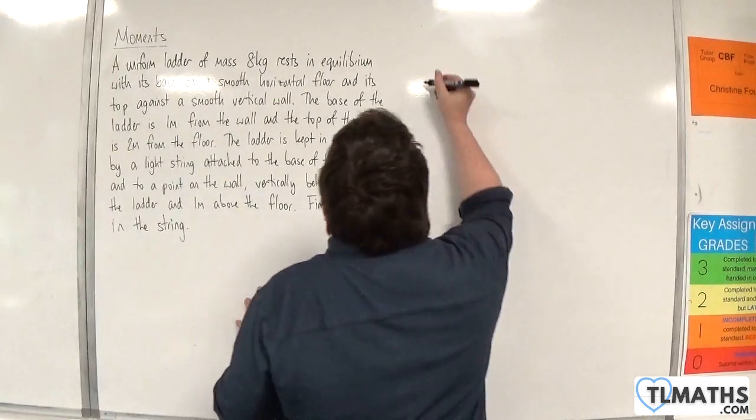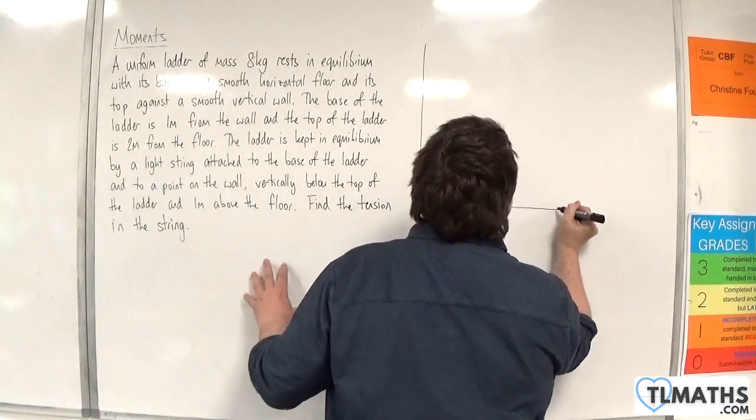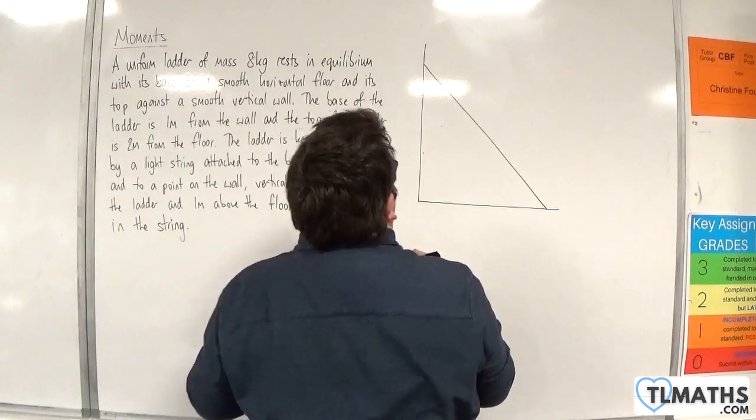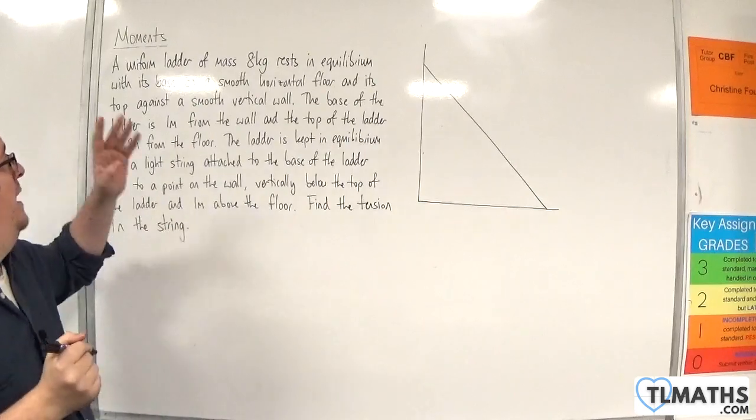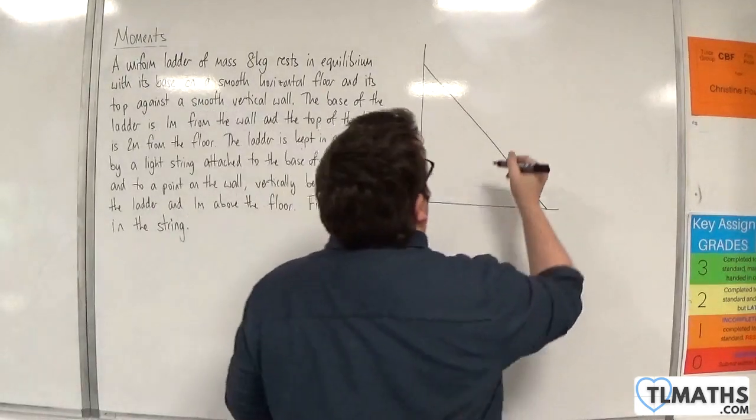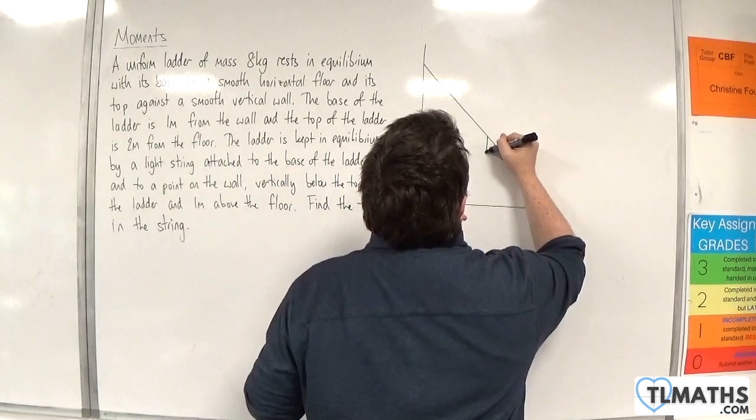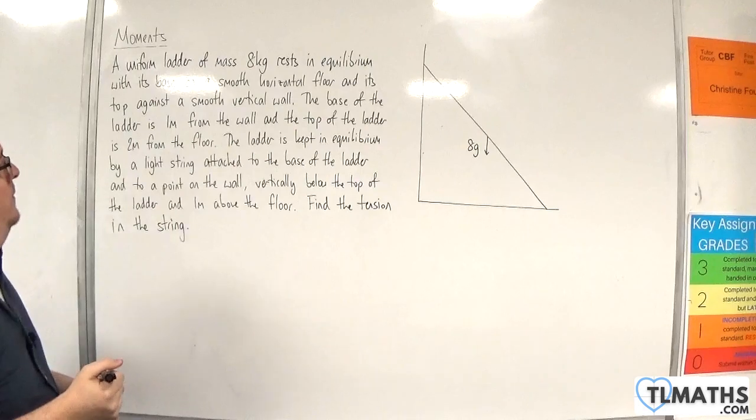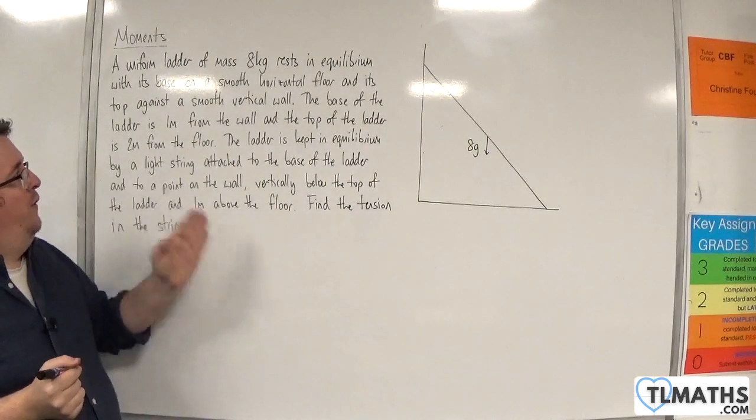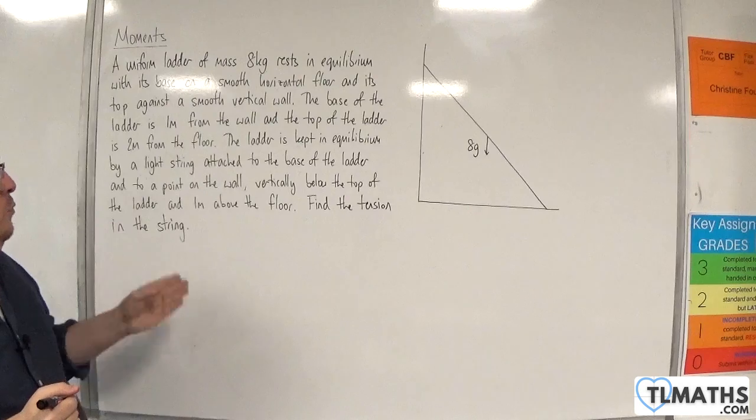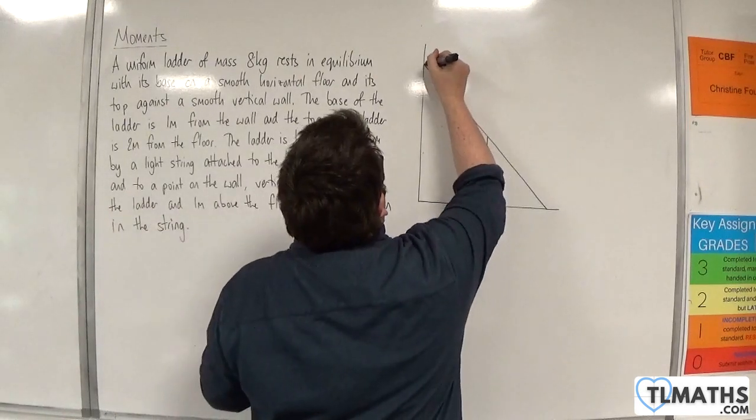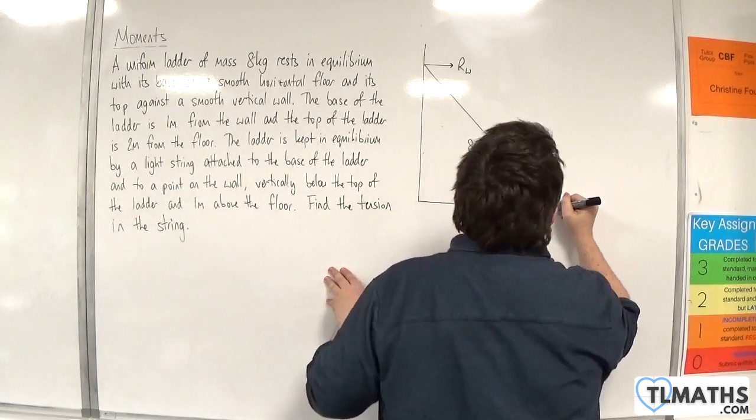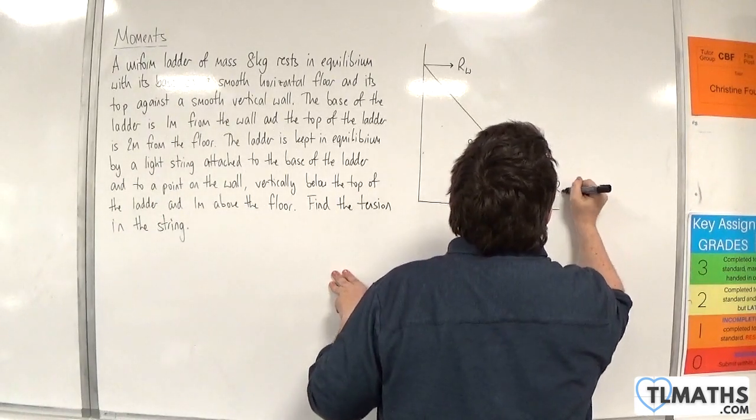We're going to need a diagram. So here's the wall, here is the floor, there's my ladder. Now we're told that the ladder is uniform, it has a mass of 8 kilos, so its weight will act through the centre and so that will be 8g. Now the floor is smooth, the wall is smooth, so there's no friction to worry about. There will be a normal reaction force with the wall and a normal reaction force with the floor.